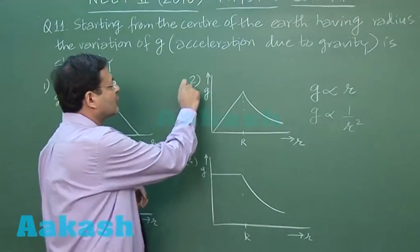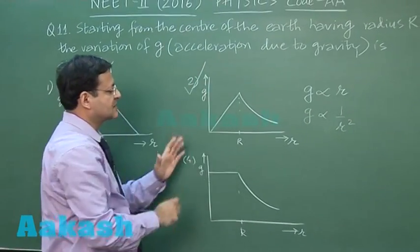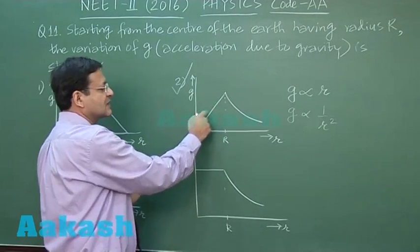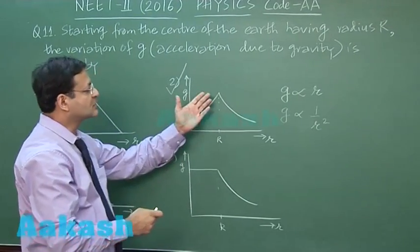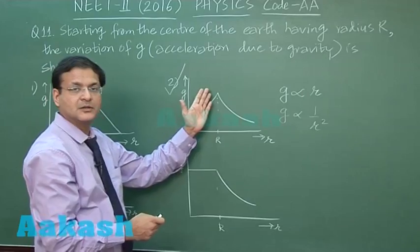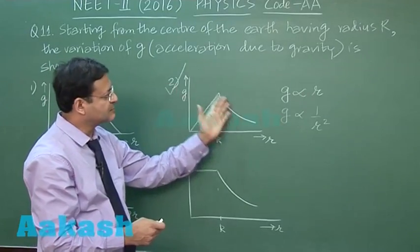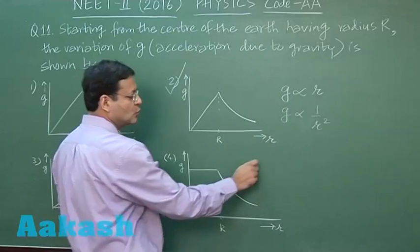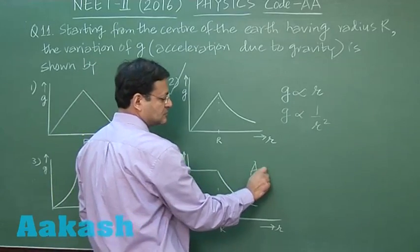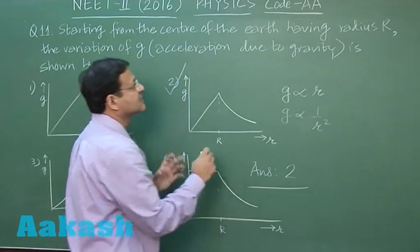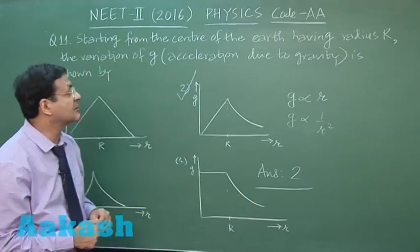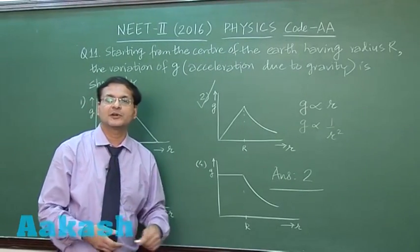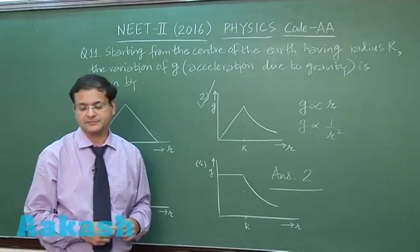The most appropriate option is: up to radius r it is a linear variation — g proportional to r — and outside the surface of the earth it is proportional to 1/r². So I am marking answer 2 for this straightforward question, that is question 11. Now let us switch over to the next question, that is question 12.